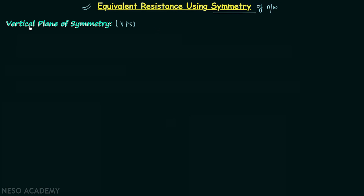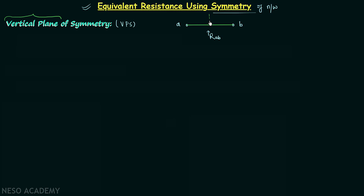To understand vertical plane of symmetry, let us take two points of any network — let's say point A and point B — and we are required to calculate the equivalent resistance between A and B, that is R_AB. Whenever you have this type of situation and you think the network is symmetrical, try to make the vertical plane of symmetry. From the name itself, we know it is a vertical plane. To construct it, first join the two points and then draw a plane bisecting the line at 90 degrees.